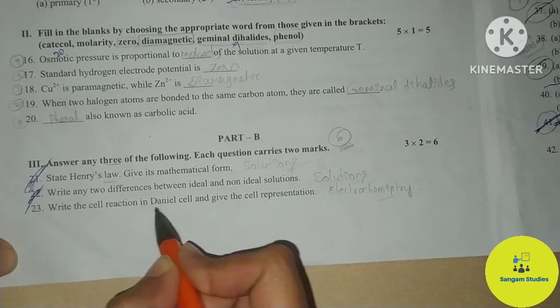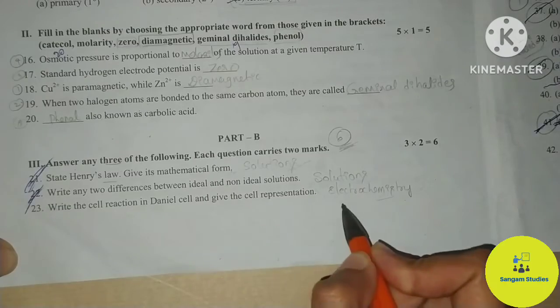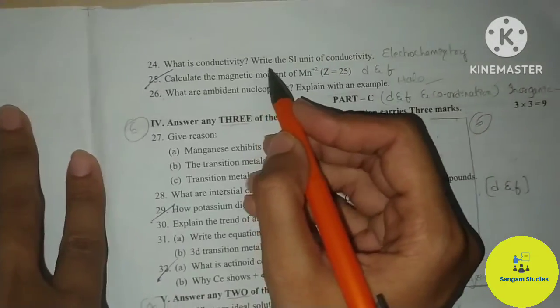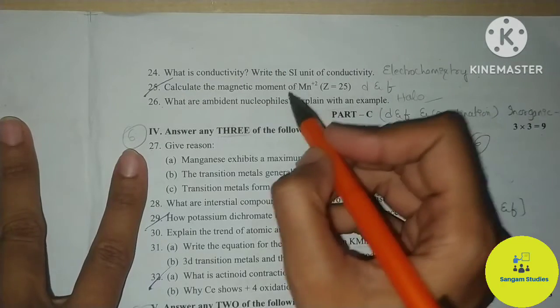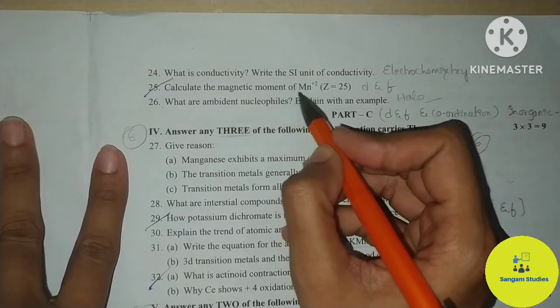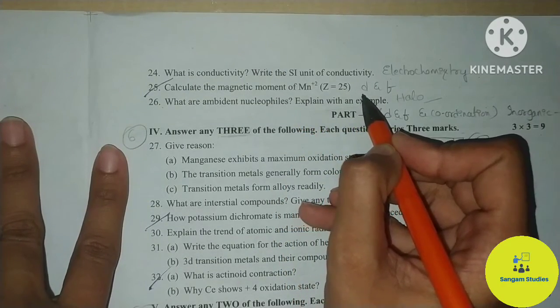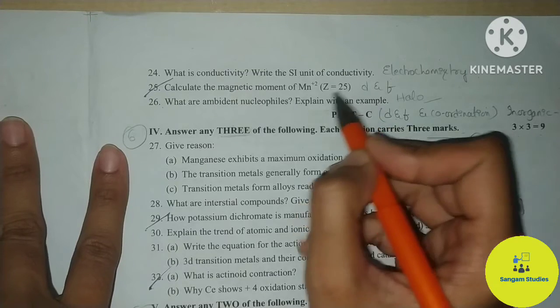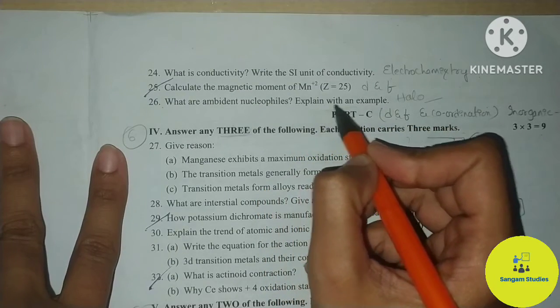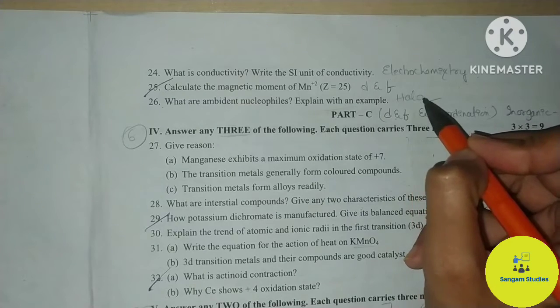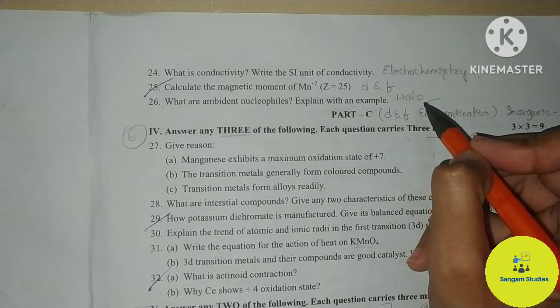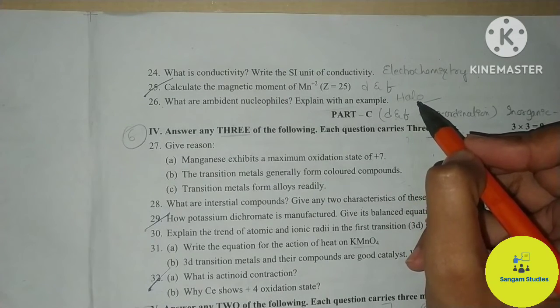Write the cell reaction in Daniel's cell and give the cell representation — this is from the electrochemistry chapter. What is conductivity? Write the SI unit of conductivity — also from electrochemistry. Calculate the magnetic moment of Mn²⁺ — D and F block element question. What are amphidentate nucleophiles? Explain with an example — from the haloalkanes and haloarenes chapter. If you observe carefully, out of 6 questions, 1 question is a tough one.